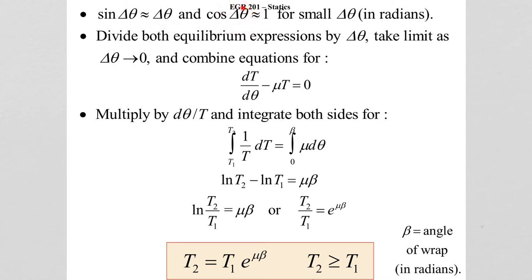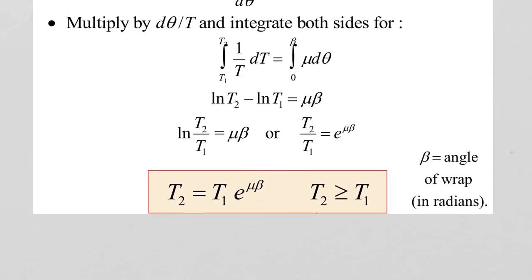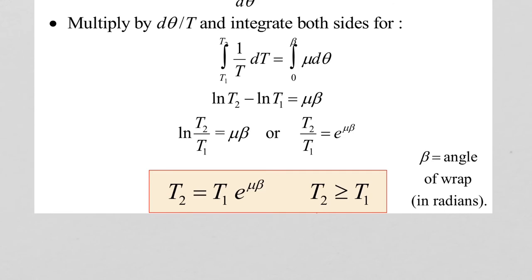And as this gets small, delta theta gets small for the cosine. It is approximately 1 for small delta thetas in radians. We can get to this point here. Bottom line, where we get to is this equation on the bottom that is important for us right here.